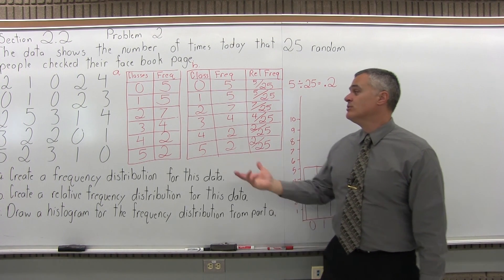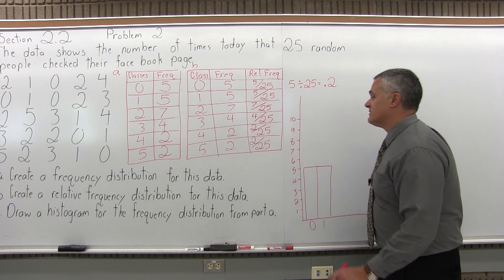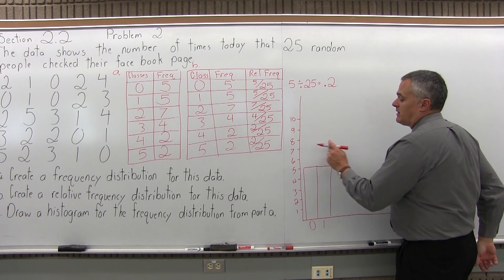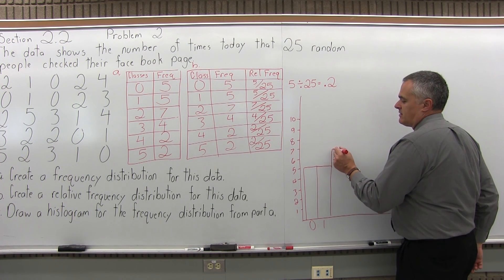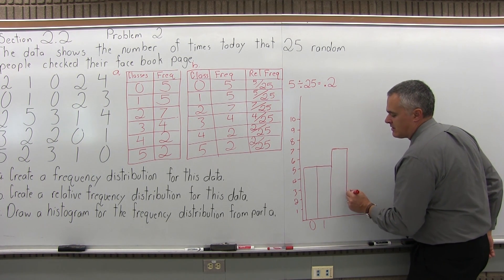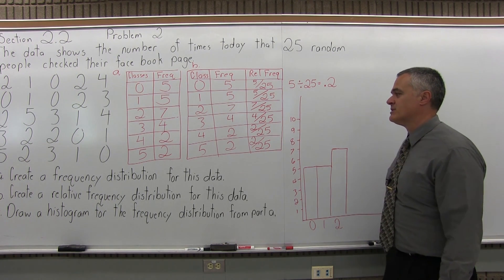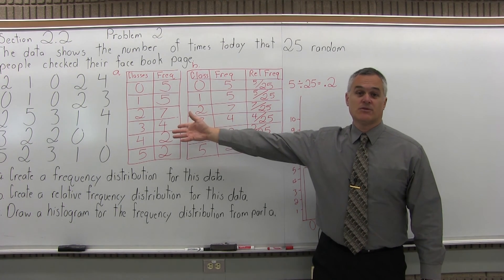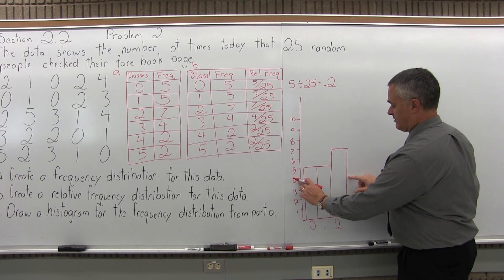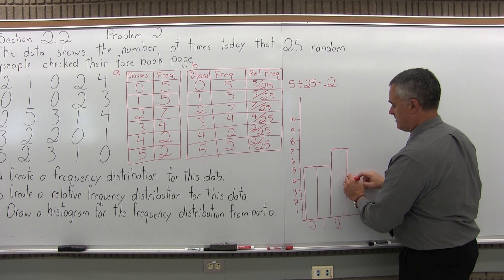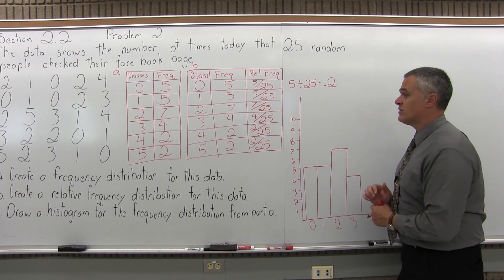The next bar, two, again for people who check Facebook twice in one day, has a frequency of seven. So its bar will go up to a height of seven. Again, the bars touch. It looks like seven is right about there. I'm going to label that with a two because that's the class it's representing. And the next one for three has a frequency of four. It will go up to a height of four. So I have a four on my number scale, it's about there. The bars touch. That's for three.